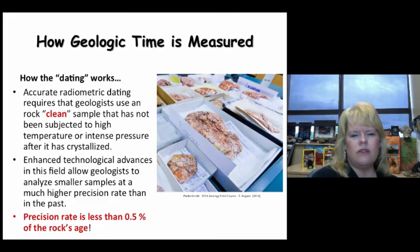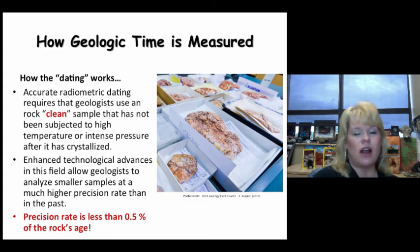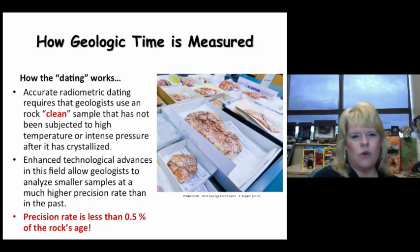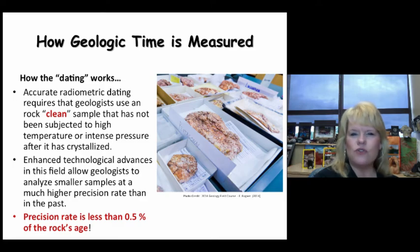Selecting material to be dated requires geologists to use a clean, non-contaminated sample. Clean means not only how you collect and analyze it, but also that it hasn't undergone extreme high-temperature or pressure change — which rules out moderate and high-grade metamorphic rocks that have often undergone some form of recrystallization. Enhanced technological advances in this field have greatly improved the ability of geologists to find the true age of rocks at much higher precision.